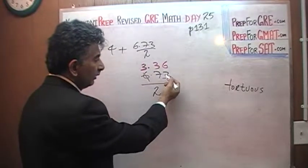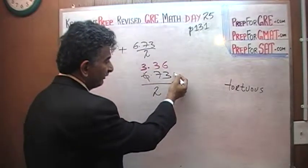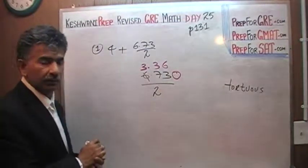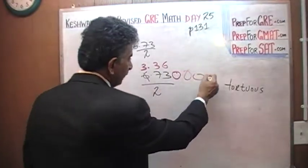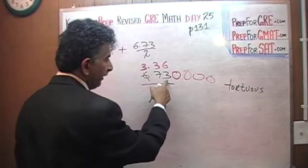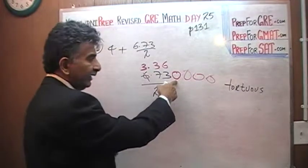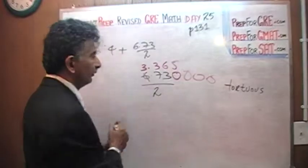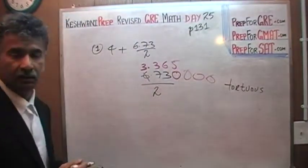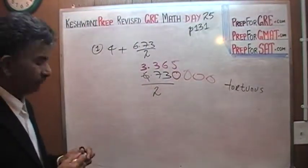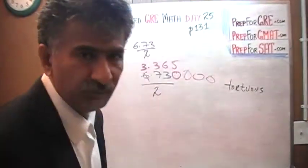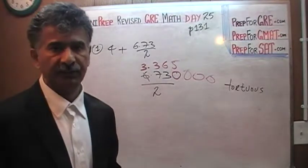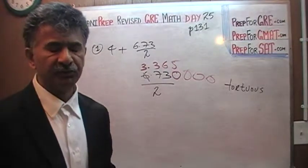The remaining 1 goes and joins the next digit and becomes 13. How many 2s in 13? There are 6, with remainder 1. That remaining 1 joins the next digit — which is 0 — and becomes 10. How many 2s in 10? There are 5. No need for a calculator. Try to minimize calculator use as much as you can.